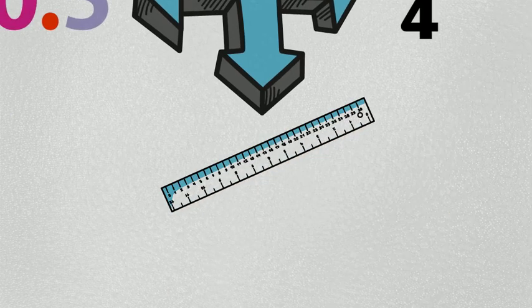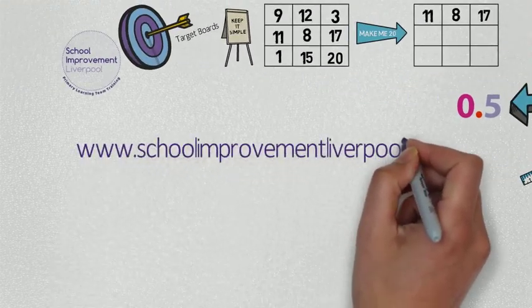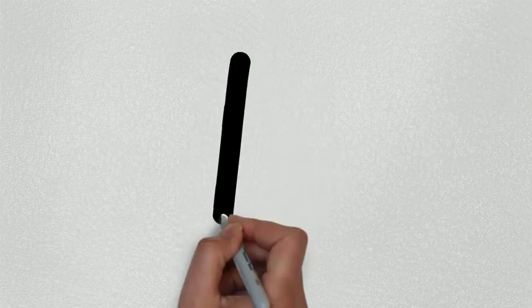Or finally, you could also use measures. Ask the children to convert whatever measure you've put in your grid. For more tips and ideas, visit www.schoolimprovementliverpool.co.uk.